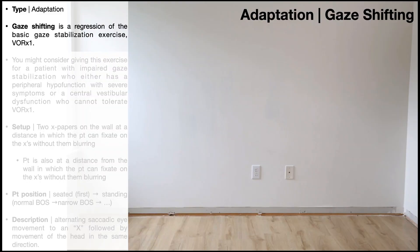In this video we're going to be talking about gaze shifting. This is one of the three major adaptation exercises that's used in vestibular rehab. The other two adaptation exercises being the VOR times one and the VOR times two.